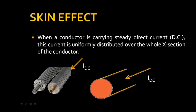The skin effect means: when a conductor is carrying steady direct current, this current is uniformly distributed over the whole cross section of the conductor. For these conductors — your transmission lines — you are passing DC current, and this current is uniformly distributed over the whole cross section. This is the conductor; this is the cross sectional view. The colored part represents the current uniformly distributed over the whole cross section. The current passing here is the I_DC, the DC current.